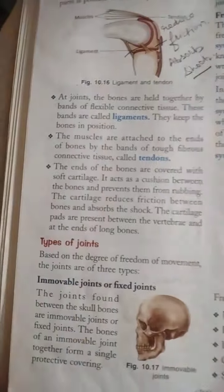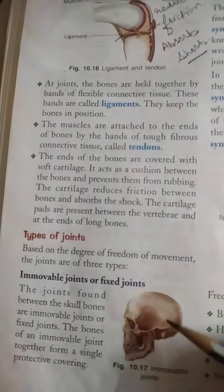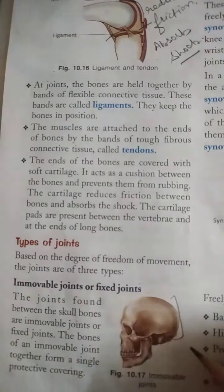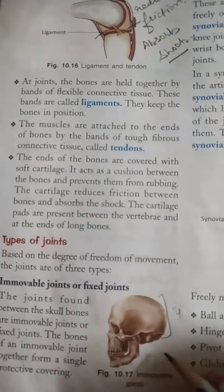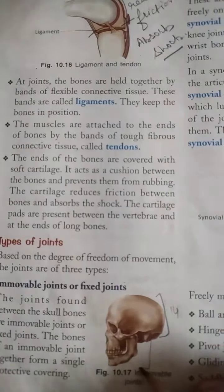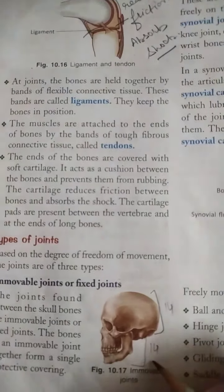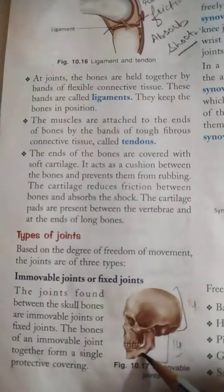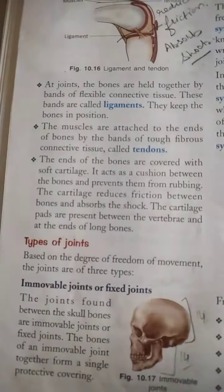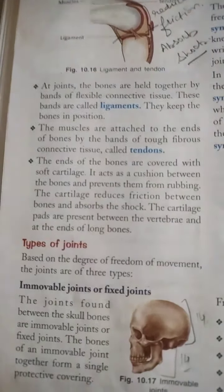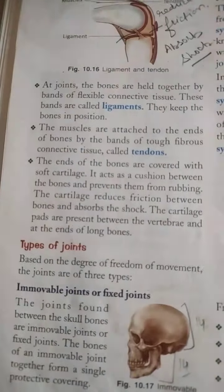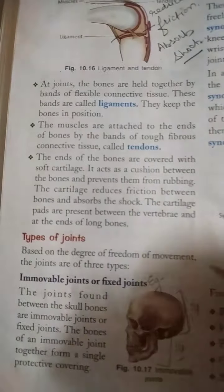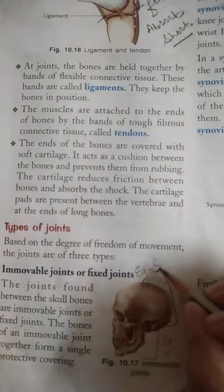In the case of the skull, most of the joints are immovable. The cranial part of the skull has 8 bones and the facial part has 14 bones. Out of all these bones, only the lower jaw is movable and the rest of the bones are immovable — meaning they show no movement. The example of an immovable joint is found in the skull.